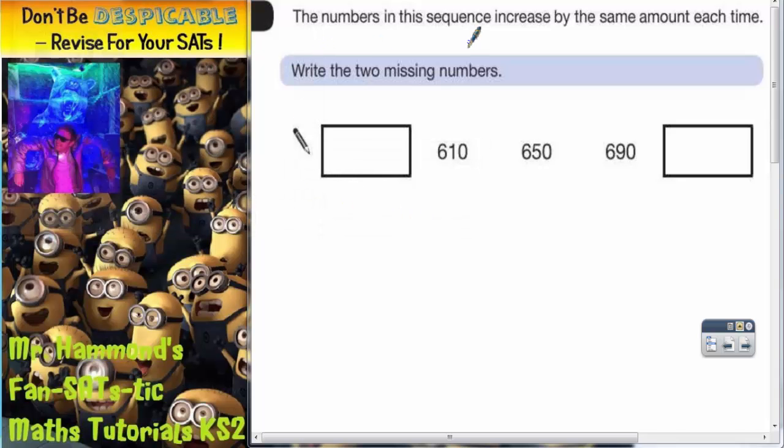Question number two, the numbers in this sequence increase by the same amount each time. Write the two missing numbers.